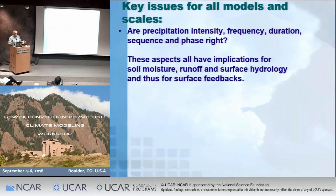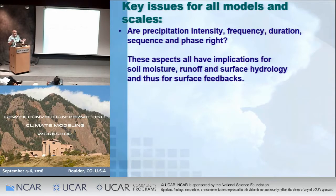This type of resolution gives us the opportunity to look at questions like intensity, frequency, duration, and phase of precipitation. One challenge in our water cycle program here at NCAR is getting this right. Climate models tend to underestimate intensity and overestimate frequency of precipitation, and getting the intensity and duration correct has implications for soil moisture, runoff, and surface hydrology.